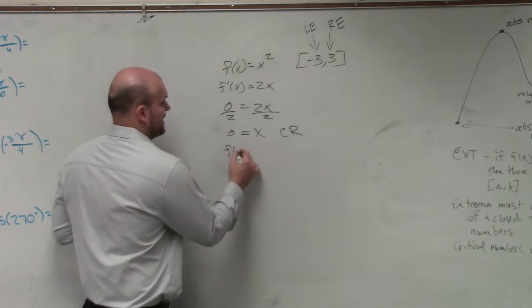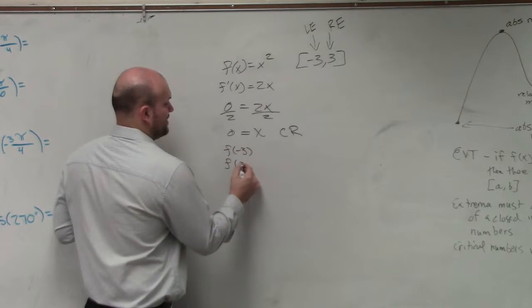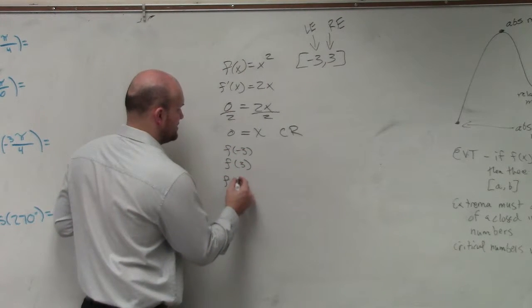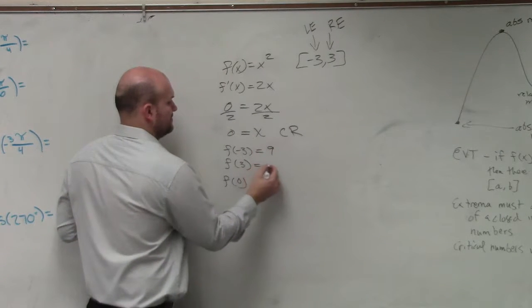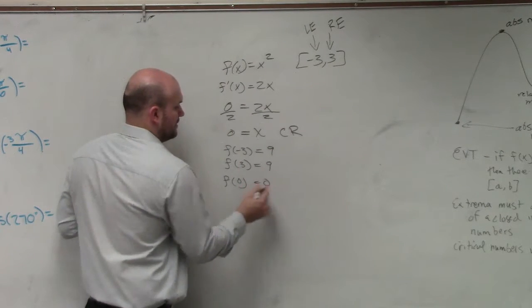So therefore, I'm just going to do f of negative 3. I'm going to do f of 3. And I'm going to do f of 0. Well, that's 9. That's 9. And that's 0.